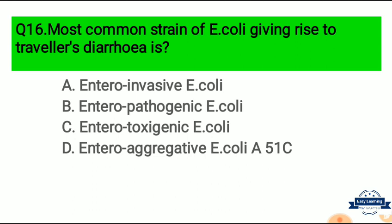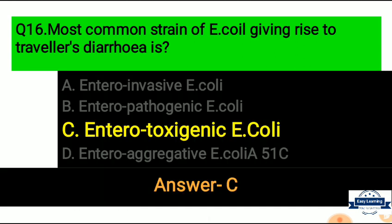Question 16: The most common strain of E. coli giving rise to traveler's diarrhea is — Option A: Entero-invasive E. coli, Option B: Enteropathogenic E. coli, Option C: Enterotoxigenic E. coli, Option D: Enteroaggregative E. coli. The correct answer is Enterotoxigenic E. coli, the most common strain giving rise to traveler's diarrhea.